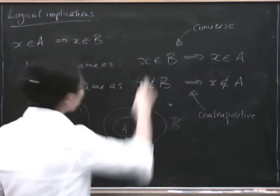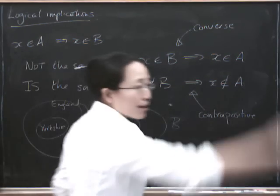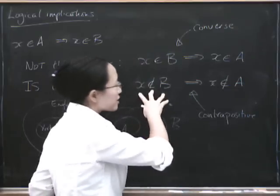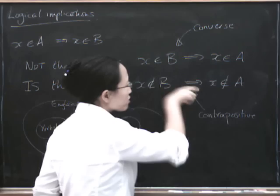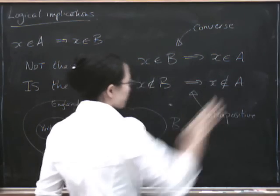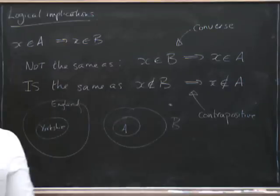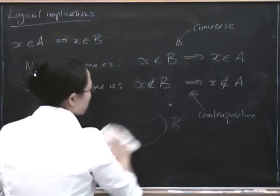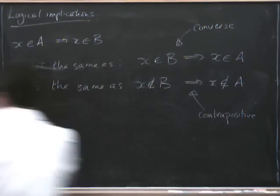Because what we've done in this one is we've just gone backwards. But what we've done in this one is that we've taken the opposite of the second statement and we've gone towards the opposite of the first statement. So in general, let's write this more precisely.